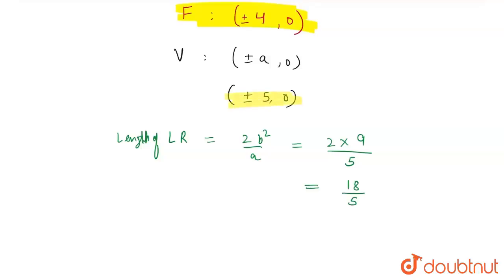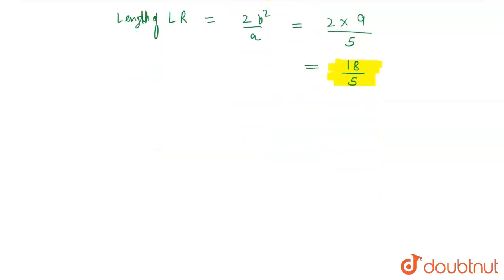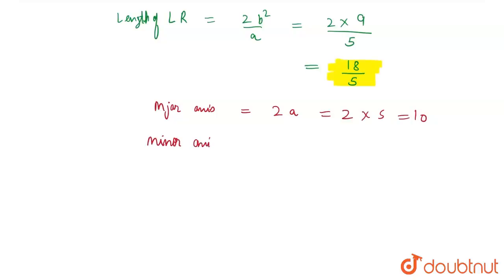So these are the coordinates of the vertices and the length of the latus rectum. The length of the major axis = 2a = 2 × 5 = 10. The length of the minor axis = 2b = 2 × 3 = 6. These are the length of the major axis and the minor axis.